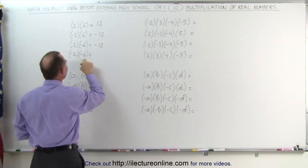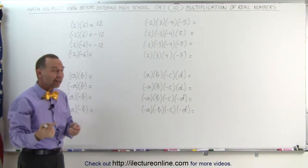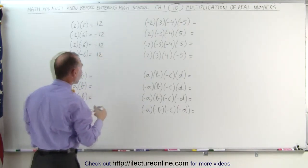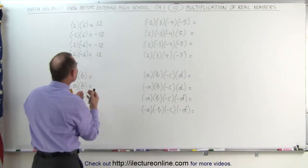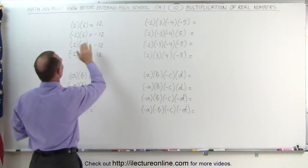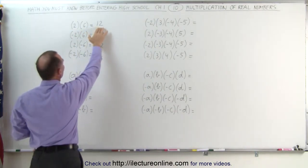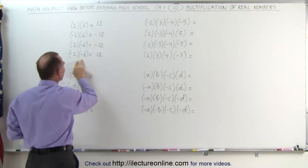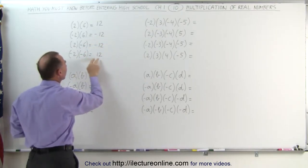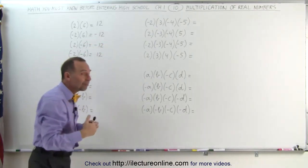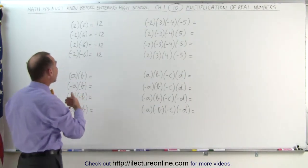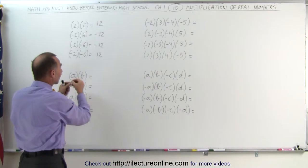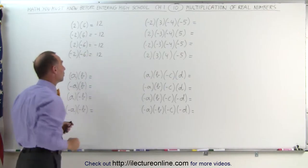But if both are negative — a negative 2 times a negative 6 — that gives you a positive 12. The key is: when all of them are positive the answer will be positive; when one of them is negative the answer will be negative; when both of them are negative the answer will be positive. Or more generally: if you have an odd number of negatives the answer will be negative, and if you have an even number of negatives the answer will be positive.